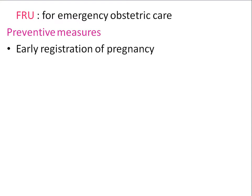Once registered, the MPHW-F can follow the mother throughout her pregnancy till delivery. As a medical officer in primary health care, you can assess the MPHW-F's work by checking registration of pregnancy. The formula: birth rate times population. For a sub-center of 5,000 population at 25 per thousand, you get 125, plus a 10% correction factor gives 138 antenatal mothers that should be registered.